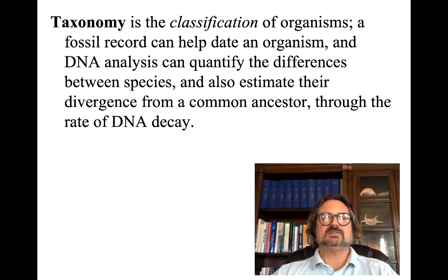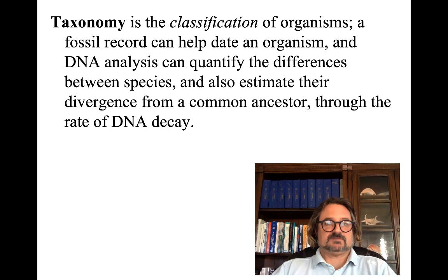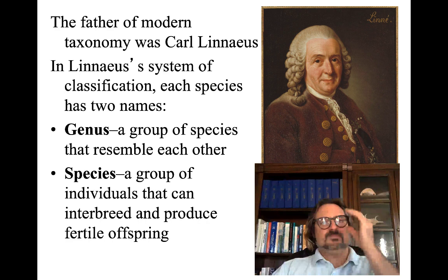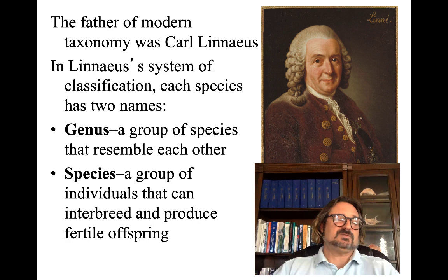Taxonomy is the classification of organisms. A fossil record can help date an organism, and DNA analysis can quantify the differences between species and estimate their divergence from a common ancestor through the rate of DNA decay. The father of modern taxonomy was Carl Linnaeus, and in his system, still used today, each species has two names: the genus and the species. The genus is a group of species that resemble each other, and a species is a group of individuals that can interbreed and produce fertile offspring.